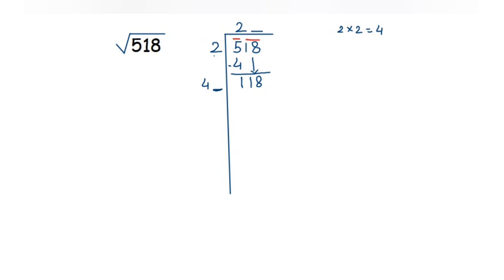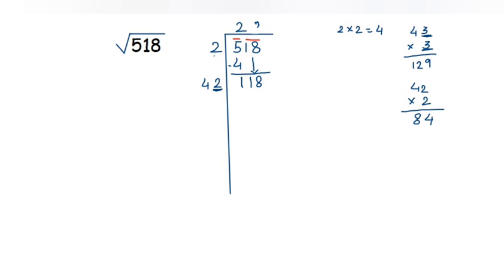We need a digit such that when we multiply the full new divisor by that digit, the result is less than or equal to 118. Trying 3: 43 × 3 = 129 — that's more than 118, so reduce. Trying 2: 42 × 2 = 84. Yes, 84 is less than 118, so we take 42 as the divisor and 2 as the next quotient digit. 42 × 2 = 84; subtract from 118.